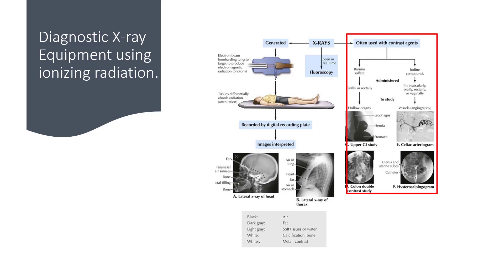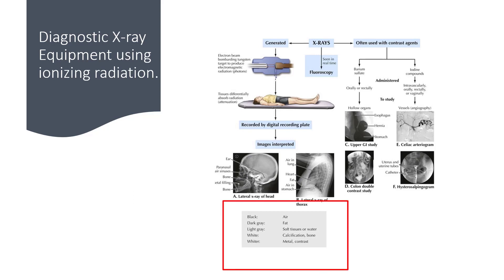If we use a contrast media, we're adding an additional absorbent factor within the patient, and we have to use an exposure selected for that particular contrast media. Without contrast media, we're looking at regular tissue. If the radiation passes totally through, we have air, which would be black. We have dark gray, which would be fat. We have a lighter gray, which would be soft tissues, muscles, and water. And we have different shades of white, which show us calcifications and bone.